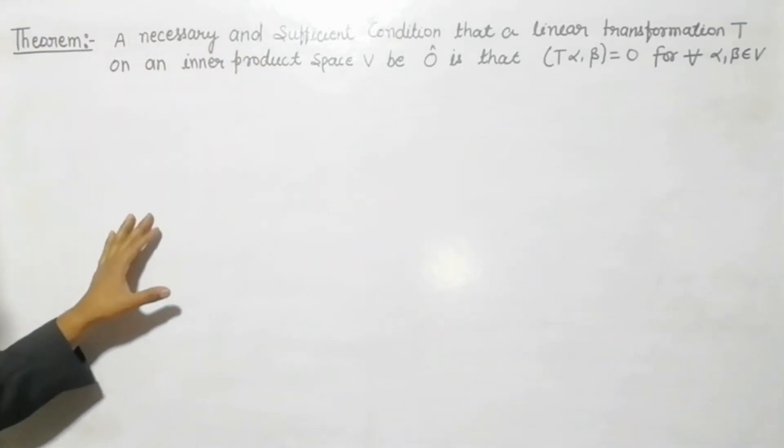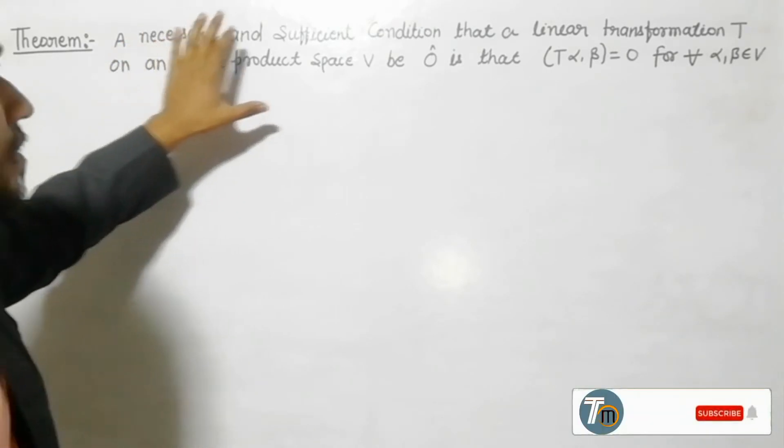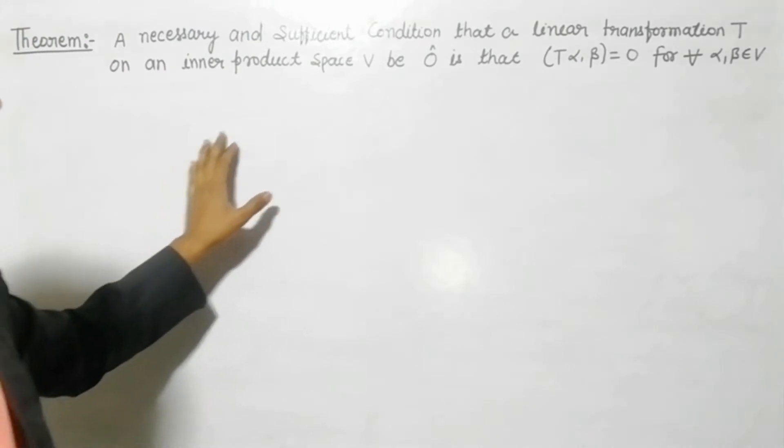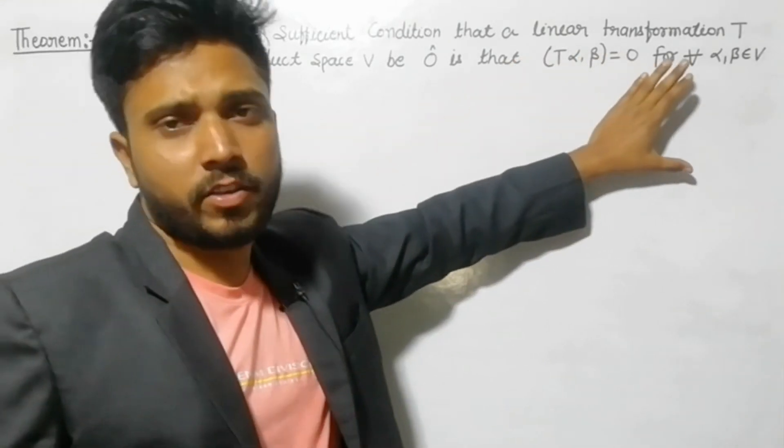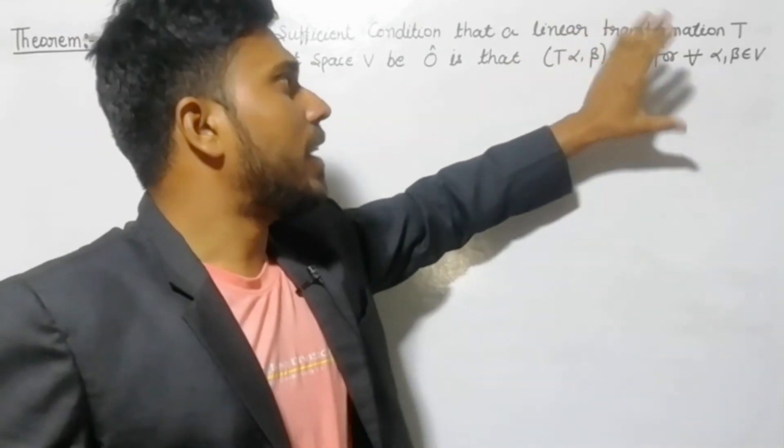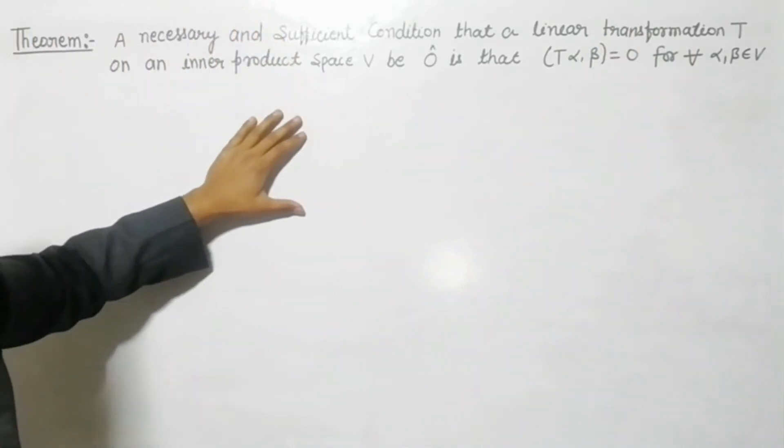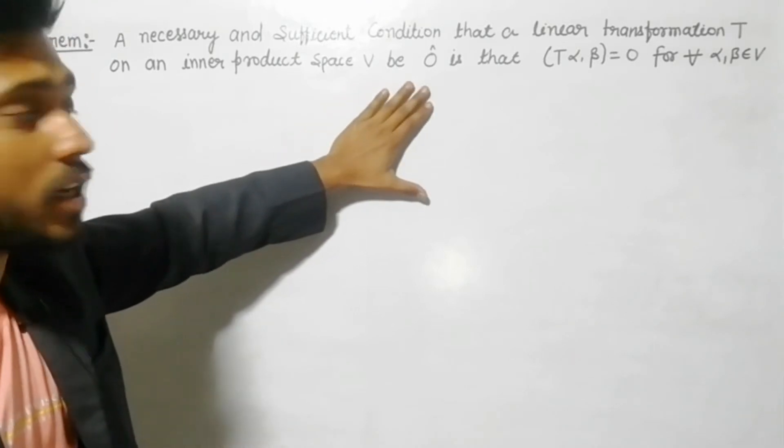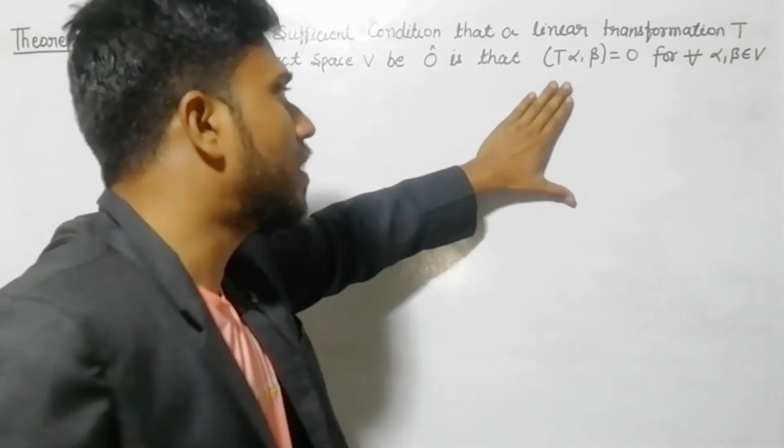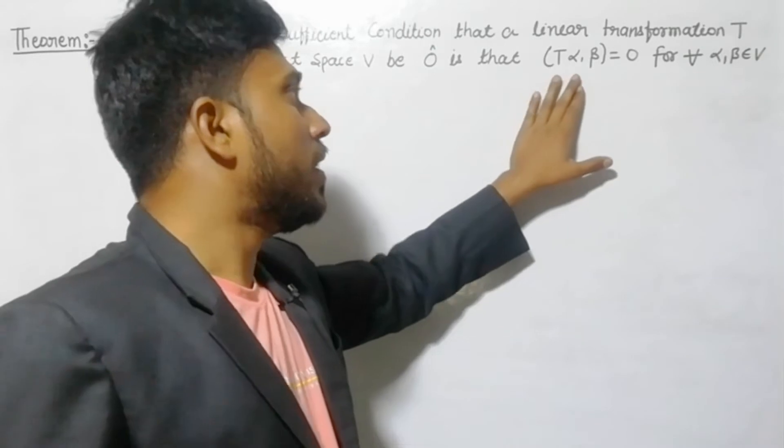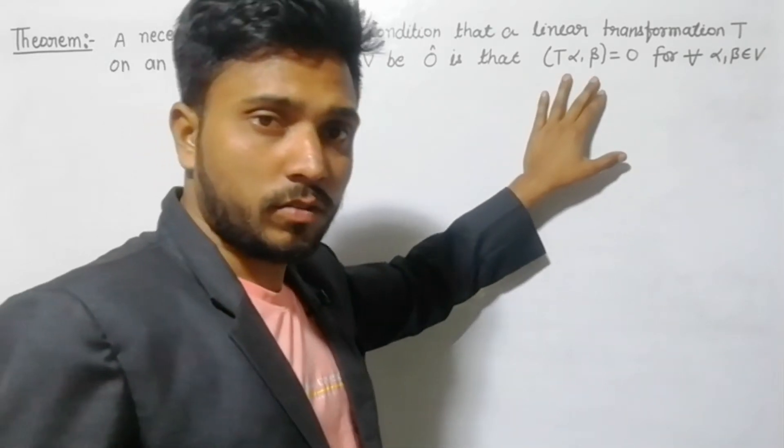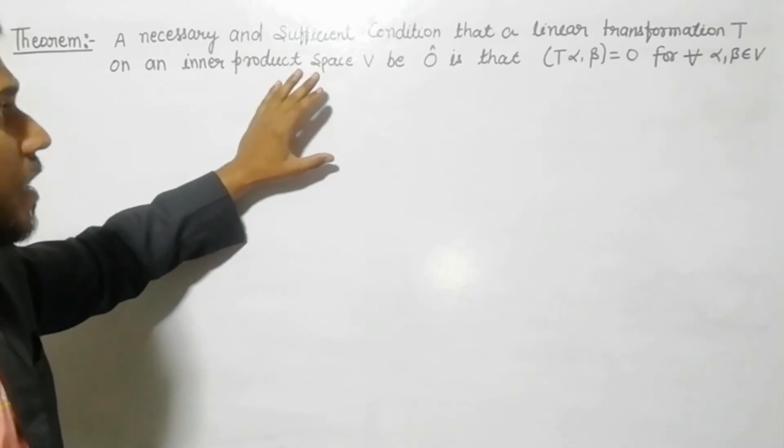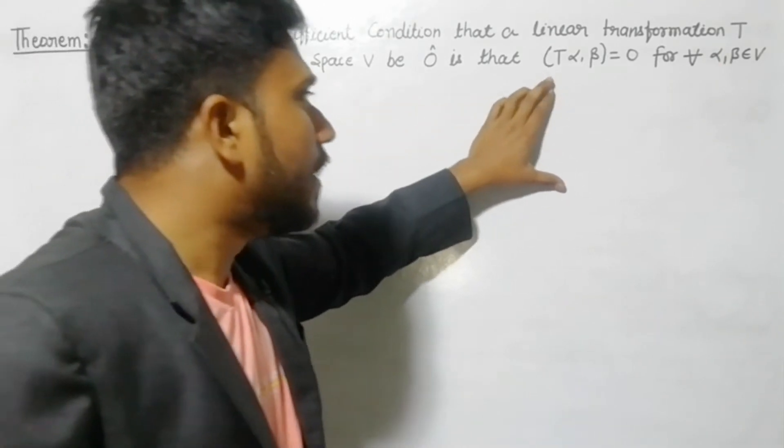So guys, here is the theorem statement that you have to prove - necessary and sufficient condition. What is the necessary and sufficient condition? That a linear transformation T on inner product space V be zero when the transformation inner product (T(α), β) = 0. To show sufficient and necessary conditions, we'll prove both conditions separately.